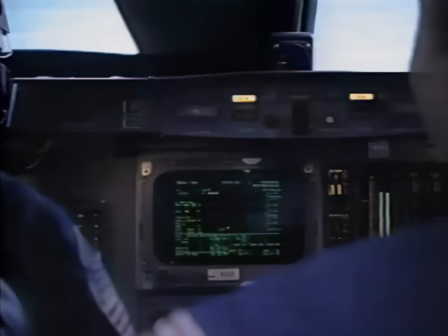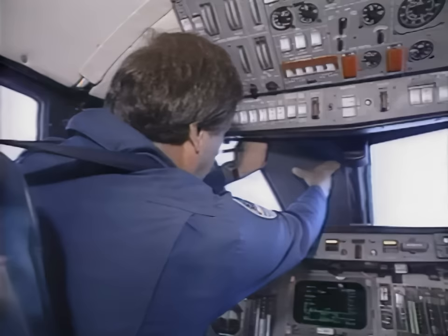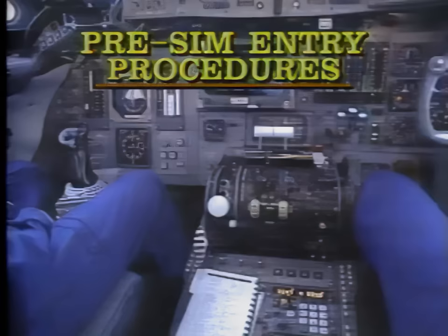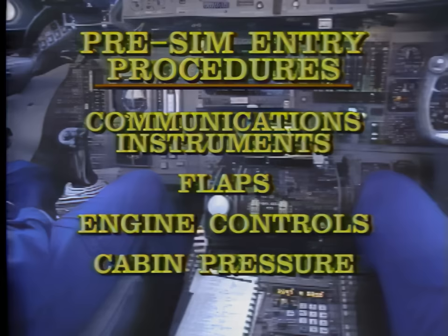The FSE is seated in the jump seat between the astronaut and the instructor. Once the crew is aboard, the STA takes off. During the flight to the training area, the crew performs pre-sim entry procedures. Masks are inserted into the cockpit windows to simulate the view from the shuttle cockpit. Communications instruments, flaps, engine controls, and cabin pressure are adjusted to the proper configuration. The pre-sim procedure should be completed by the time the STA reaches its desired altitude.